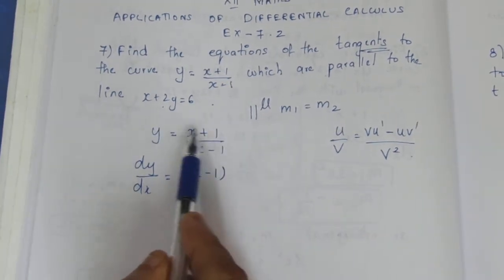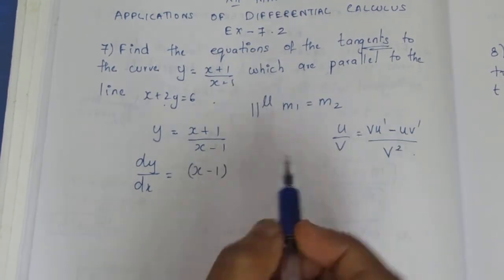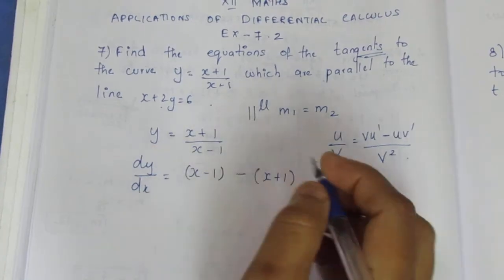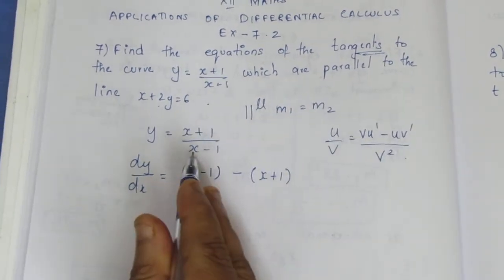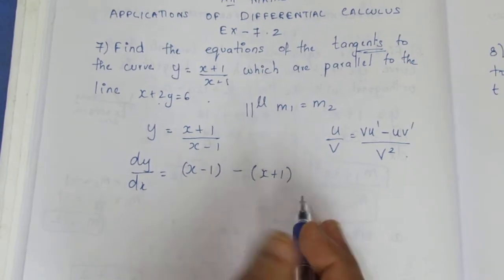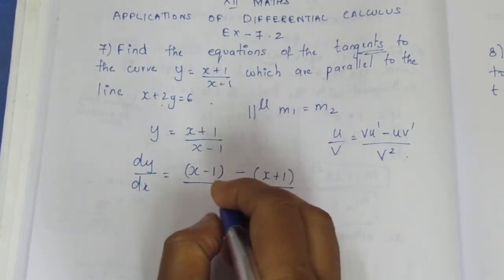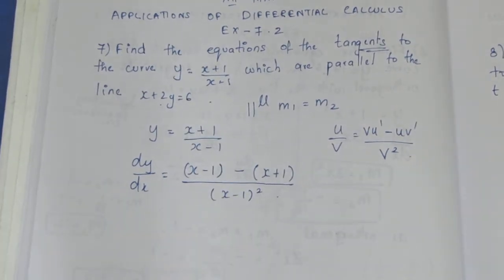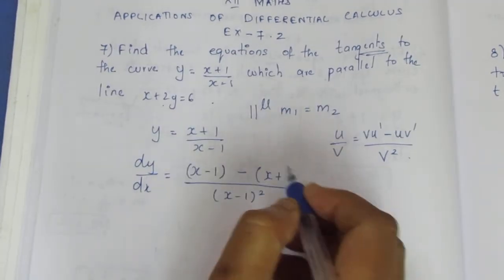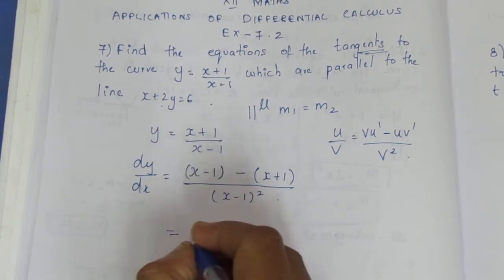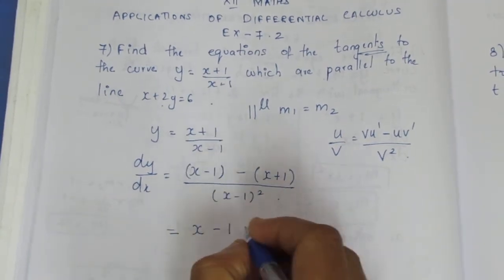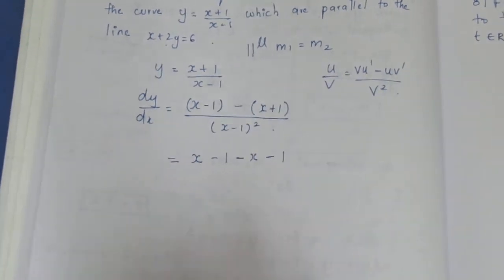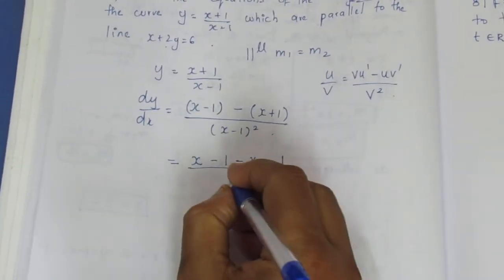The denominator differentiated: x minus 1 differentiates to 1, the constant term 1 differentiates to 0, so it is 1. Minus numerator times denominator differentiated — that is also 1. So x minus 0 is 1. Divided by v square, which is x minus 1 whole square.